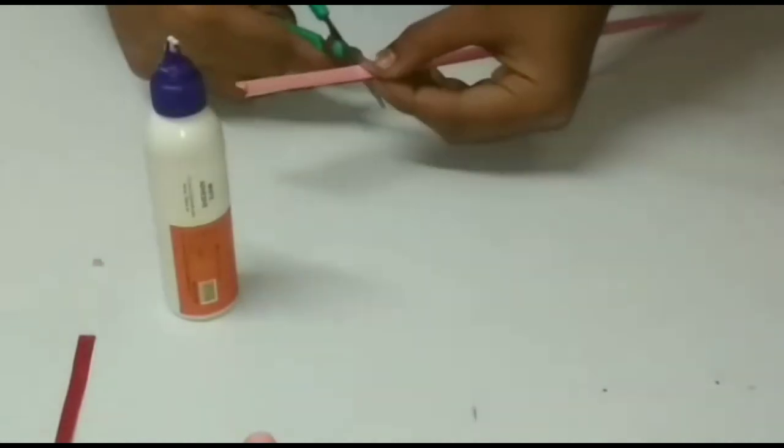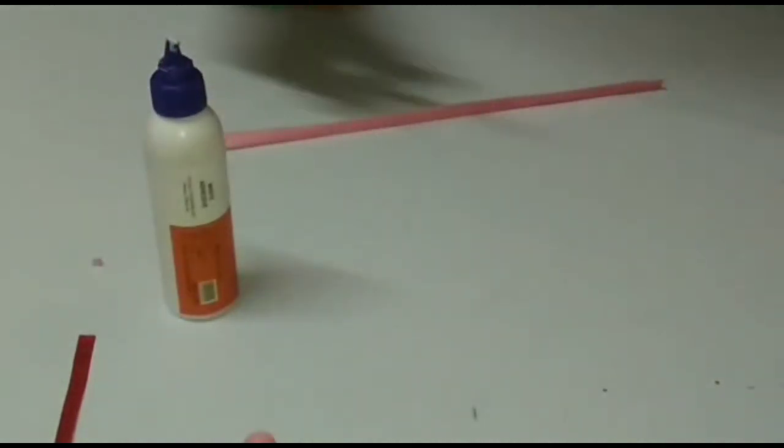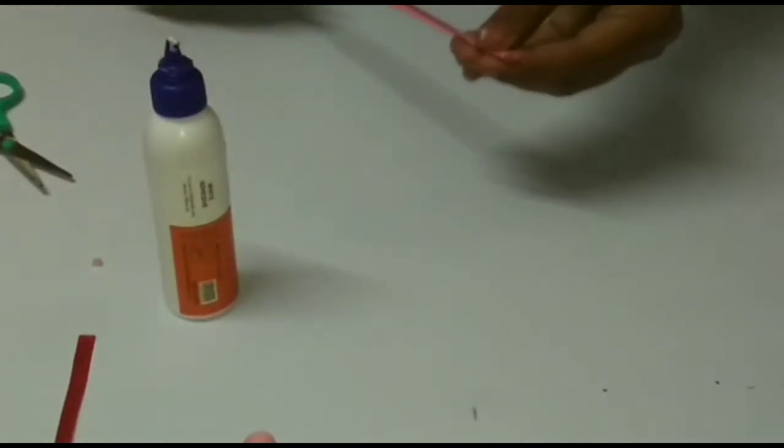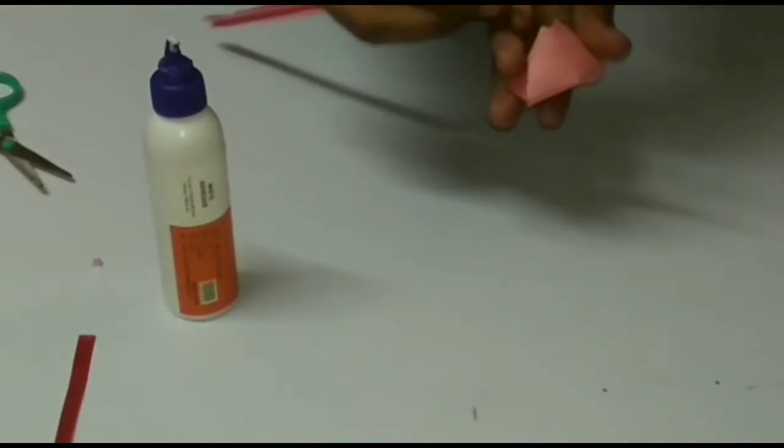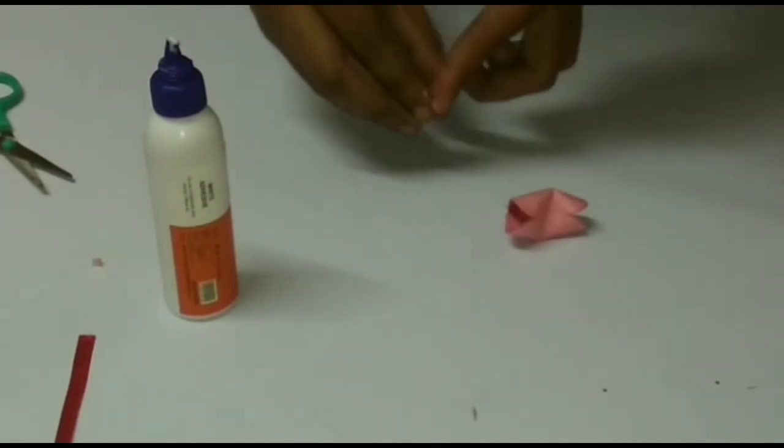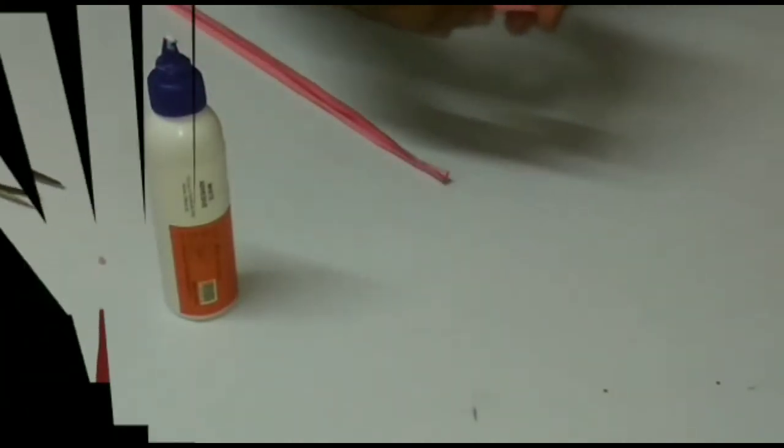So this is the extra part of the sheet like this. Now make a narrow point from the top and put this stick into this hole.